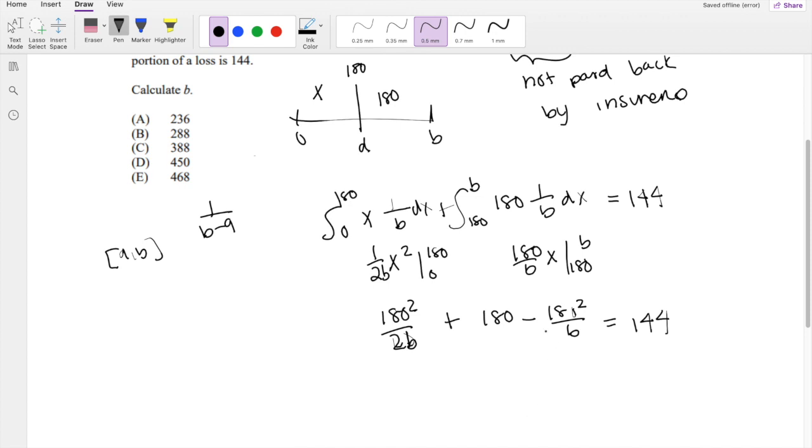This is a B, by the way. I can just subtract 144 over here, and I can multiply the denominator by 2, and then the numerator by 2.